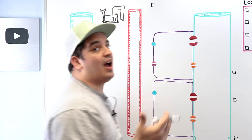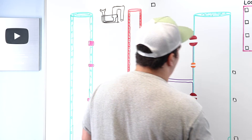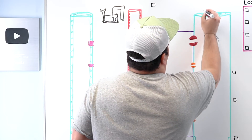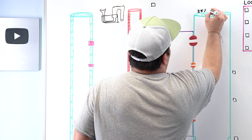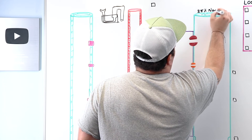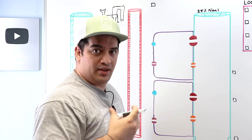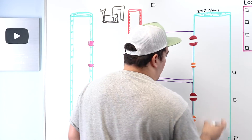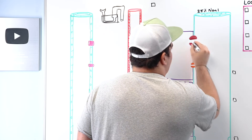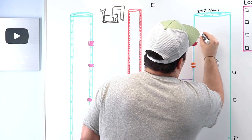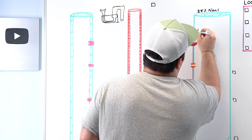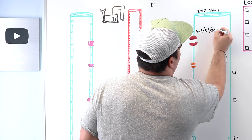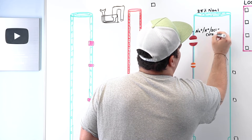What are some of those ions? In the loop of Henle, approximately 25% of the sodium chloride is reabsorbed here — that's a pretty decent amount. In the ascending limb, you have a particular type of transporter called a sodium-potassium-2-chloride co-transporter.